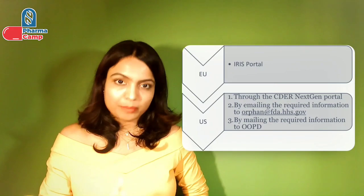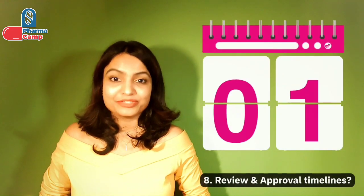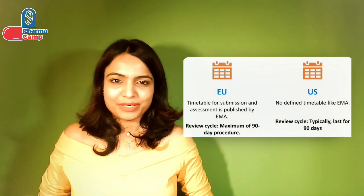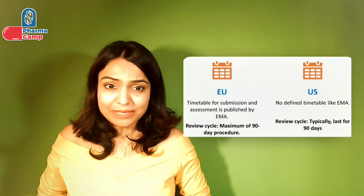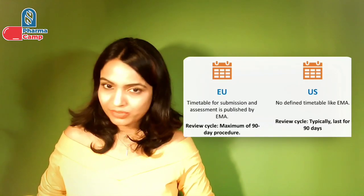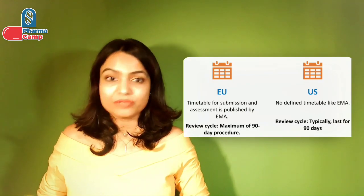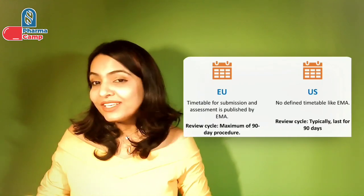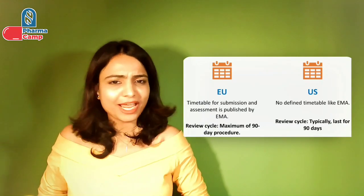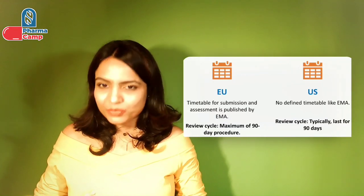The eighth comparison point is review and approval timeline. In the EU, the timetable for submission and assessment is published on EMA's website. The total review cycle is a maximum 90-day procedure, with dates and review timelines published with no flexibility. In the US, there is no defined timeline like EMA — the review can happen at any time — though it typically lasts around 90 days.